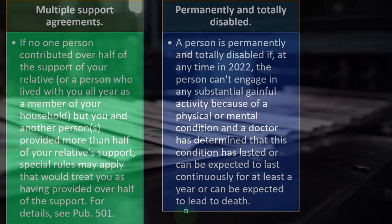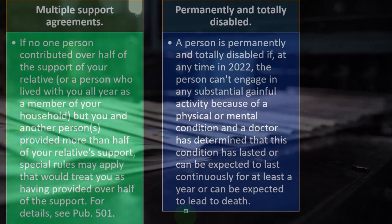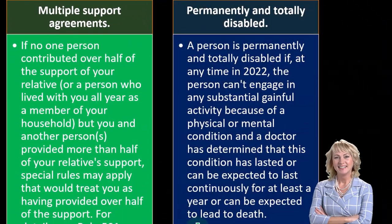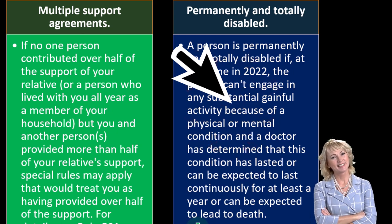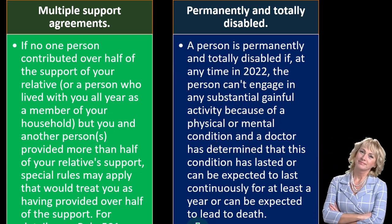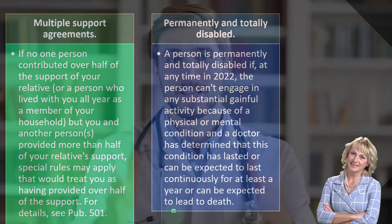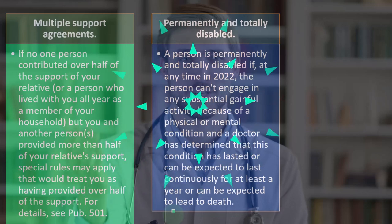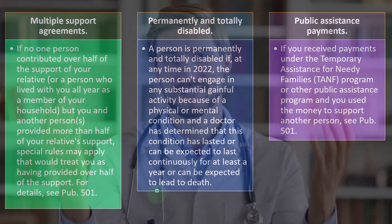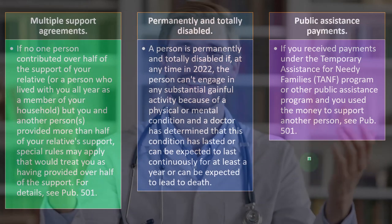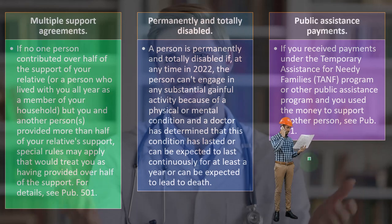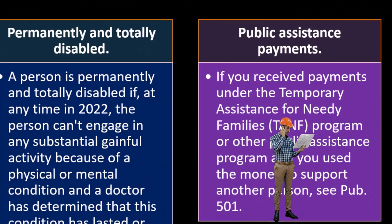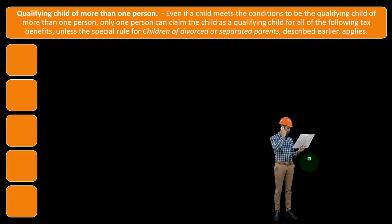Permanently and totally disabled: a person is permanently and totally disabled if, at any time in 2022, the person can't engage in any substantial gainful activity because of a physical or mental condition, and a doctor has determined that this condition has lasted or can be expected to last continually for at least a year, or can be expected to lead to death. Public assistance payments: if you receive payments under the TANF program or other public assistance program and use the money to support another person, see Publication 501.